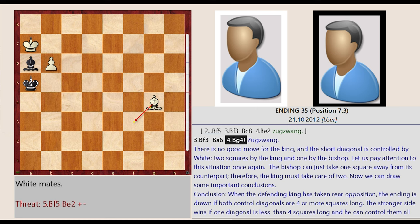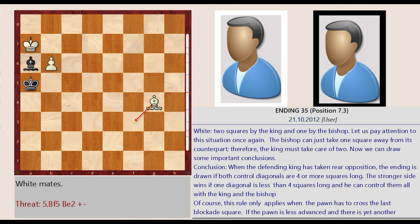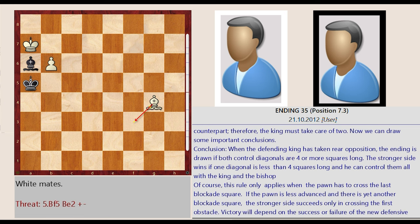Conclusion. When the defending king has taken rear opposition, the ending is drawn if both control diagonals are four or more squares long. The stronger side wins if one diagonal is less than four squares long and he can control them all with the king and the bishop. Of course, this rule only applies when the pawn has to cross the last blockade square.